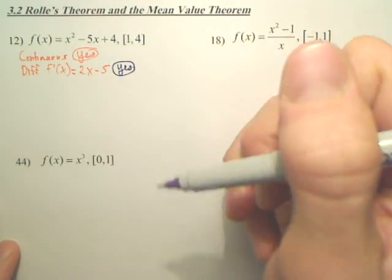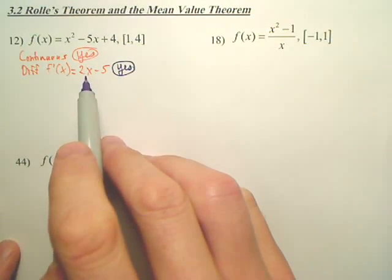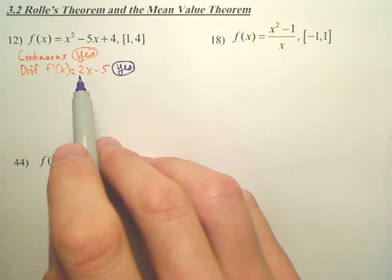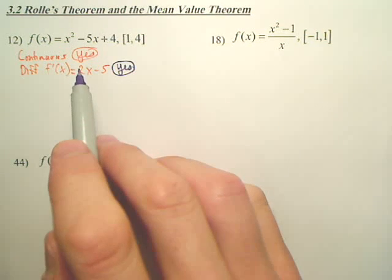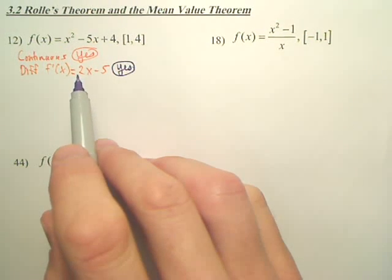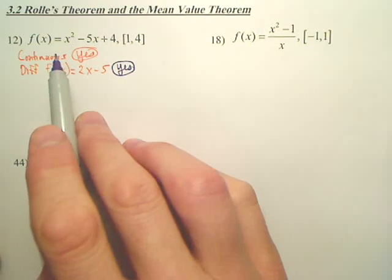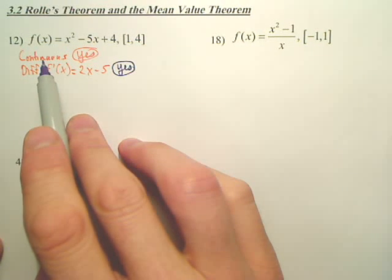So, our first two checks are good. The derivative is continuous, there's nothing wrong with the derivative equation. There's nothing that can make it discontinuous, anything that would mess it up.